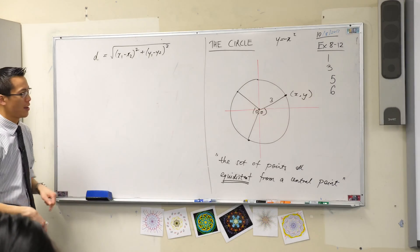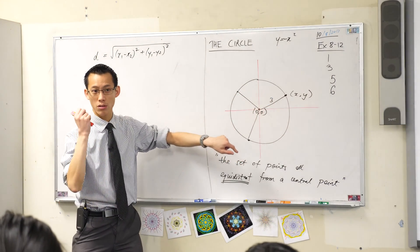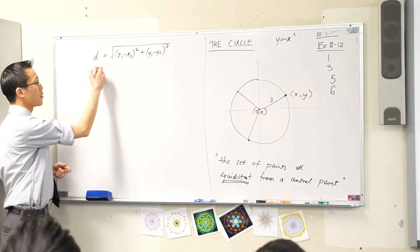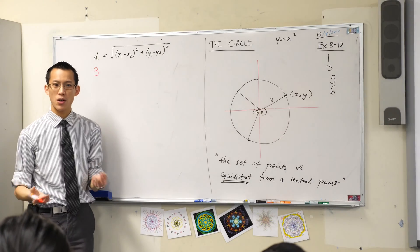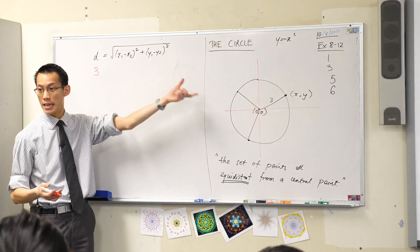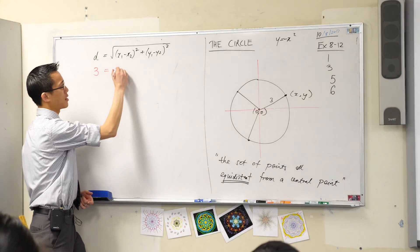On this circle, I know that all of these distances here are all equal to three. So instead of distance, I'm going to say three because I know that distance is always going to be equal to that number. Now that's equal to—what's going to go on our right-hand side?